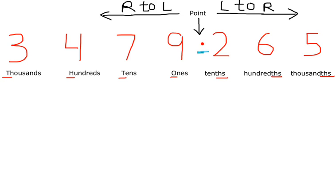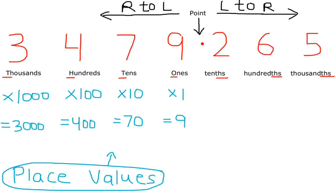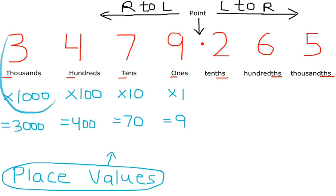After the point, we move left to right and the places are tenths, hundredths, and thousandths. We can find the place values like this: 9 multiplied by 1 gives us 9; 7 multiplied by 10 gives us 70; 4 multiplied by 100 gives us 400; and 3 multiplied by 1000 gives us 3000.